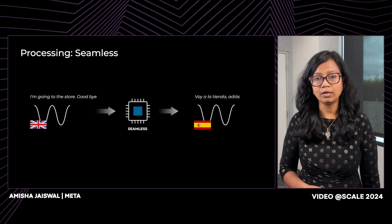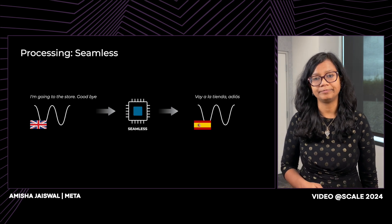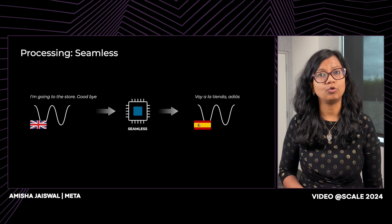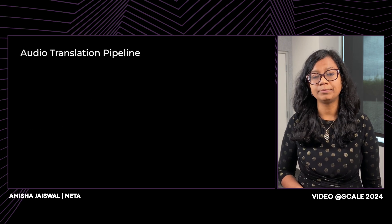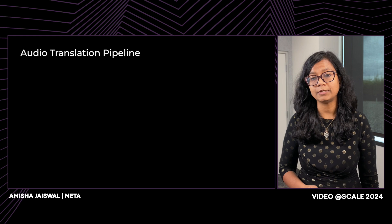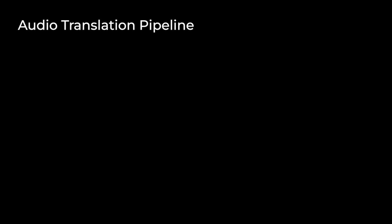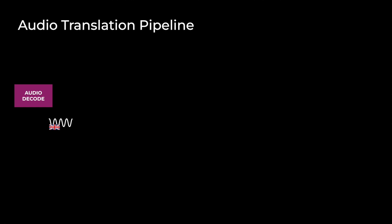With this model at the core, we have built the audio translation pipeline. The audio pipeline comprises multiple steps and uses 10-plus models for different processing steps. As a first step, we decode the audio to get PCM signals out. Next, we run a preprocessing stage, which has multiple steps like eligibility checking, sentence detection, and splitting. The first step in the preprocessing stage is to run eligibility checks to filter out unsupported streams.